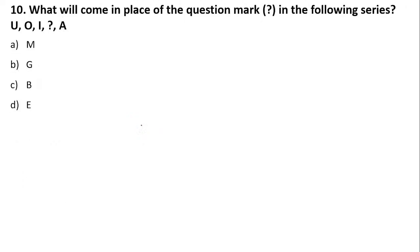Next: what will come in the place of the question mark in the following series — U, O, I, _, A? The vowels in English are A, E, I, O, U. Here in reverse we have U, O, I, and the missing one is E, then A. So the answer is option D — E.